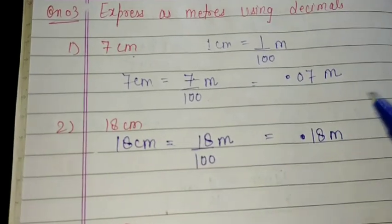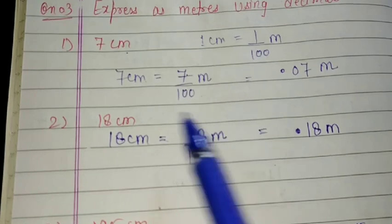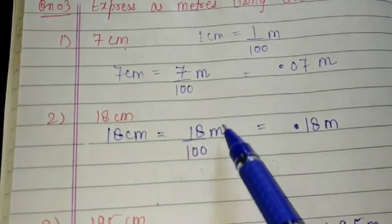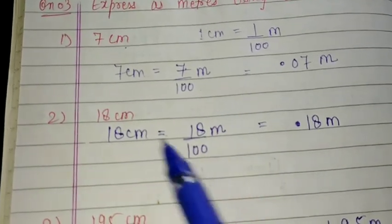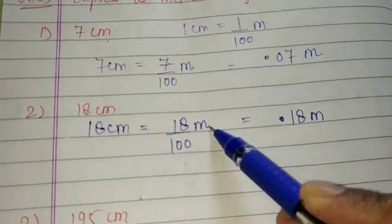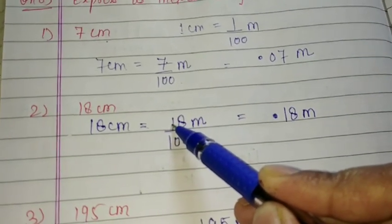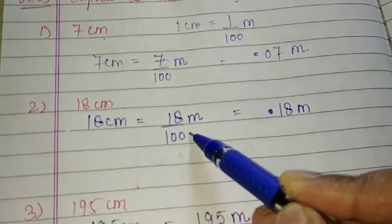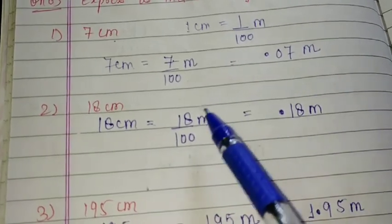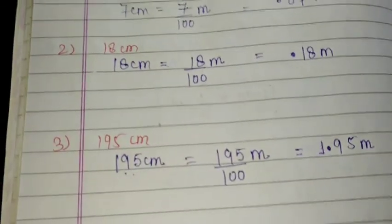18 centimeter: because I have to convert centimeter into meter, I divide that particular digit with 100. So 18 centimeter is equal to 18 by 100 meter. Just see — 1, 2 — 2 digits are already there, and downside 2 zeros are there, so I put point before 2 digits. That is 0.18 meter.